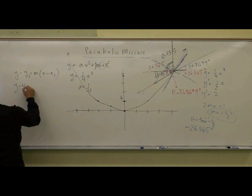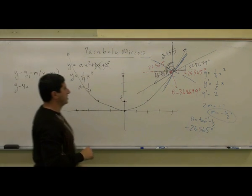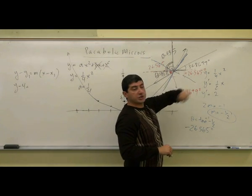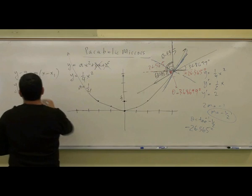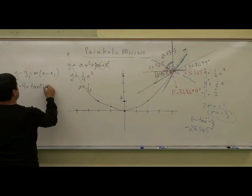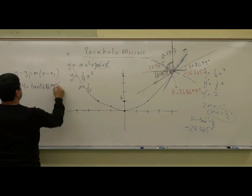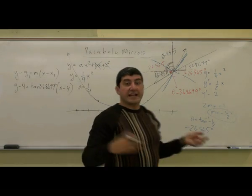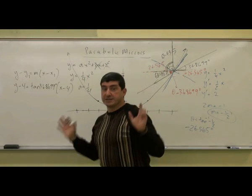So y minus 4 equals—how do I get the slope? Well it's a positive slope and so it's just tangent of 36.8699°. Tangent of 36.8699° times x minus 4. That's the general equation of the reflected line.